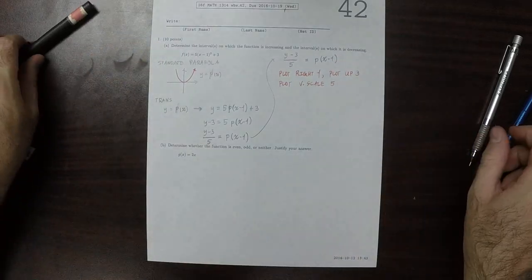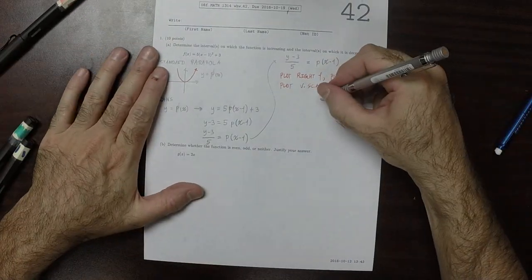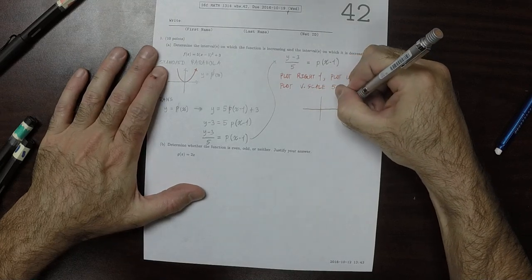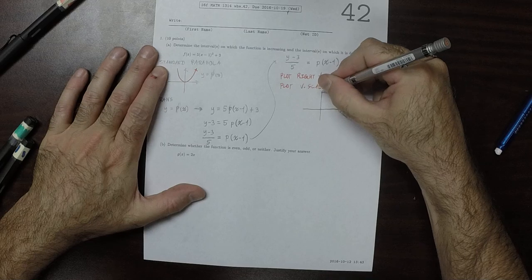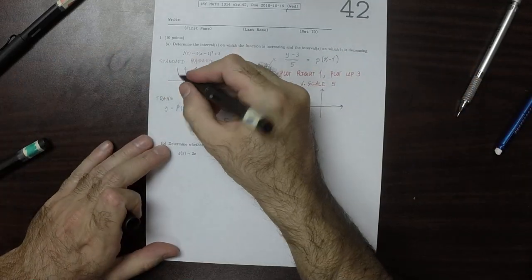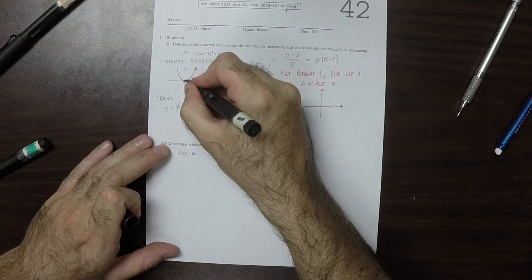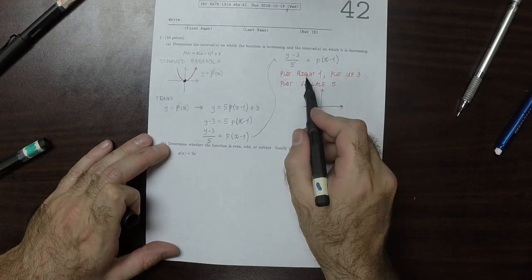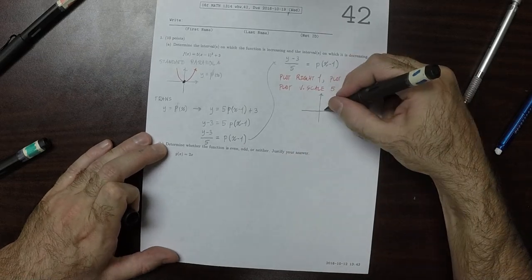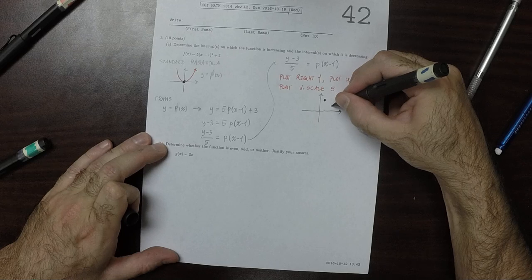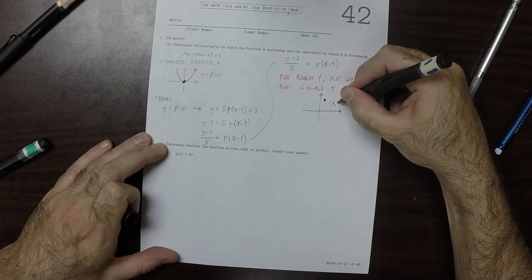So those three things are going to occur, which means that we can, for example, watch what this blue point is going to do. It's currently at 0, 0. And it's going to move right 1 and up 3. So right 1, up 3. That's 1, 3 now.